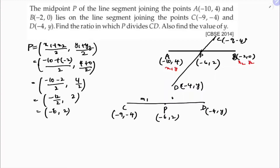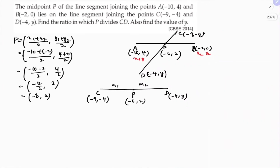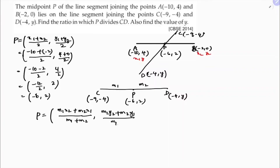I'll solve using m1 and m2. The section formula is: x = (m1·x2 + m2·x1)/(m1 + m2), y = (m1·y2 + m2·y1)/(m1 + m2). The value of P is (-6, 2), so we equate: -6 = (m1·x2 + m2·x1)/(m1 + m2).